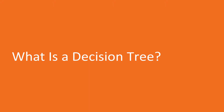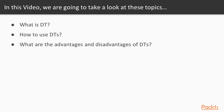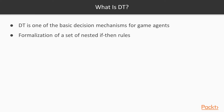So what is a decision tree? We will talk about what is a decision tree, how to use decision trees, and what are the advantages and disadvantages. A decision tree is one of the basic decision mechanisms for game agents — it's basically a formalization of a set of nested if-then rules.